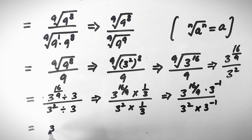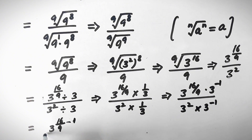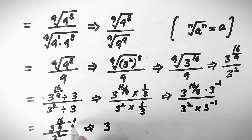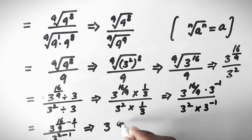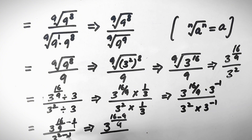Adding the powers: numerator becomes 3 to the power (16 over 9 minus 1), and denominator becomes 3 to the power (2 minus 1). Taking the LCM of 9 for the numerator's fraction: 16 over 9 minus 9 over 9 equals 7 over 9. The denominator simplifies to 3 to the power 1, which is 3.